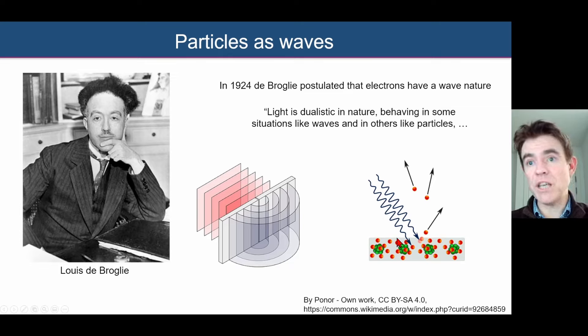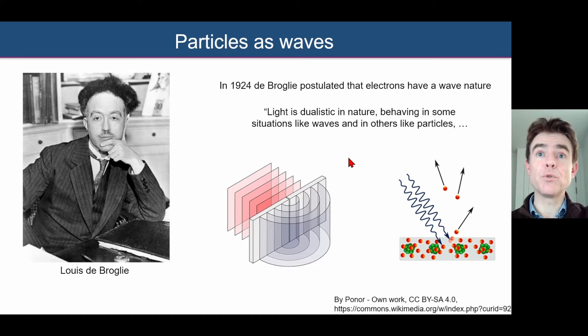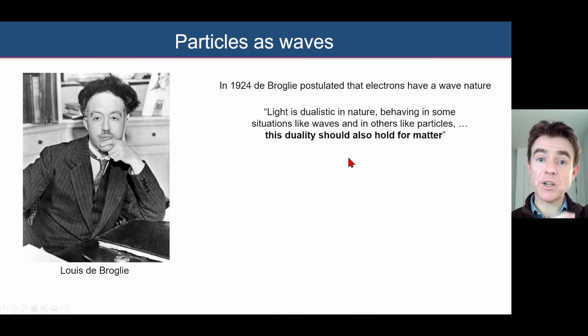Photons can be incident on a surface and have electrons emitted from the surface. That's the photoelectric effect, best explained by light being explained as a particle. Louis de Broglie basically said that kind of wave-particle duality seen for light should also hold for electrons, or indeed particles in general.